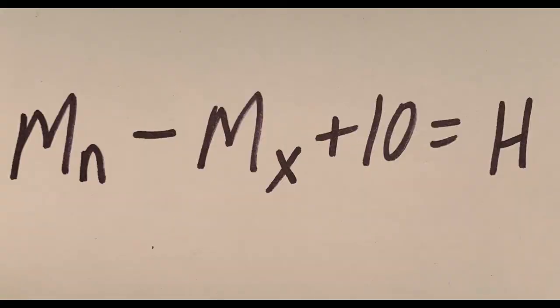Here's the formula we're going to use for this math. So the measurement of whatever pier you're working on minus the measurement of the shortest pier plus the height of that shortest post. In math terms we'll call this M sub N minus M sub X plus 10 equals H.